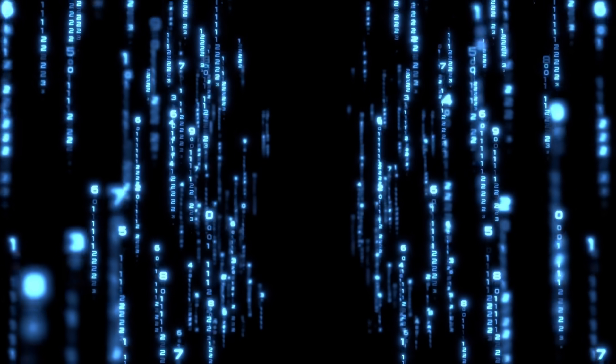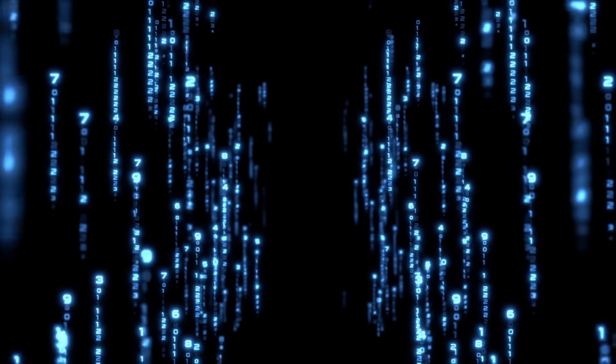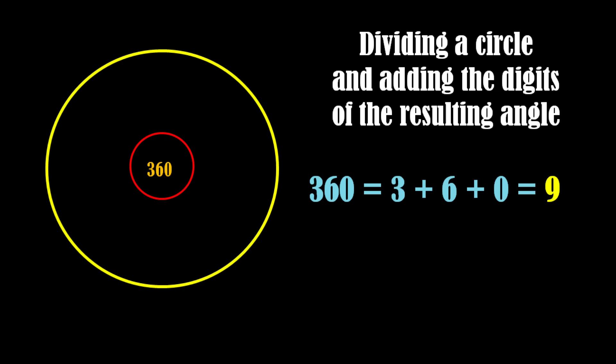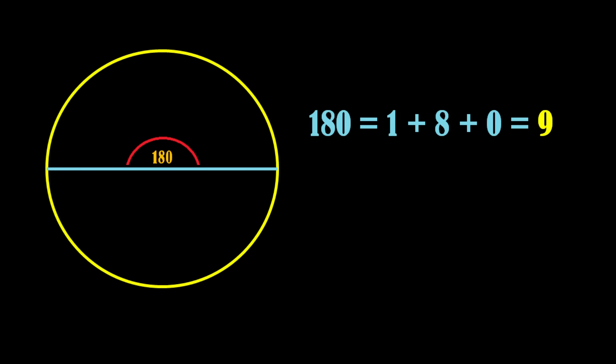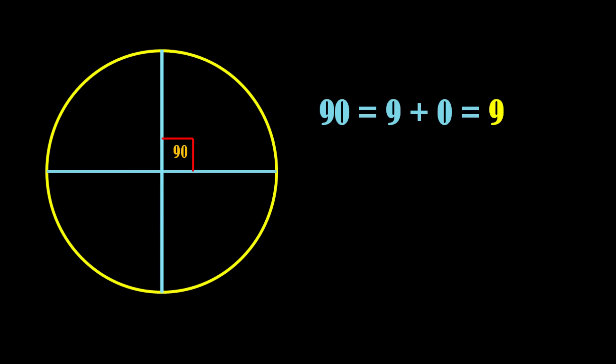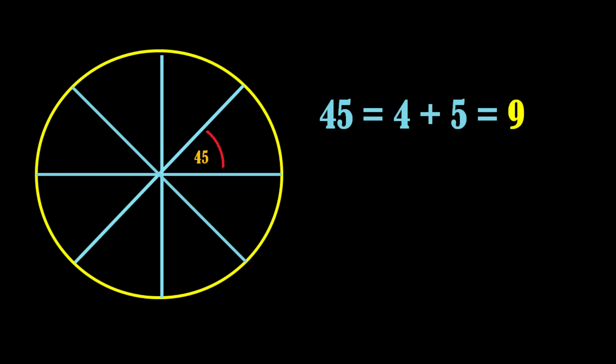If we keep on increasing the number of sides of the polygon, we will get the same number 9 every time. Did you notice an amazing thing here? When we were dividing the circle in half repeatedly, we were reaching the singularity of space. As every time we got number 9, it means number 9 follows the space up to its singularity.